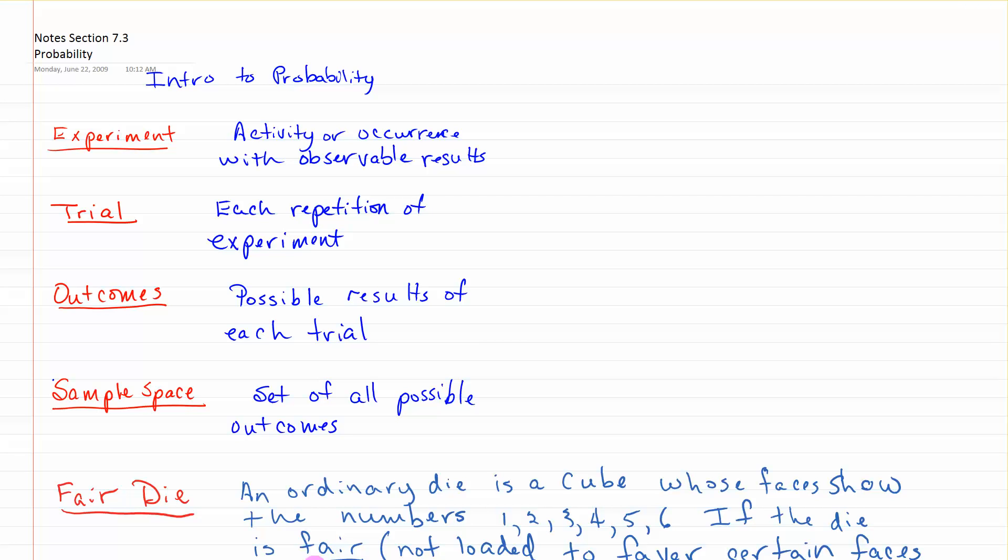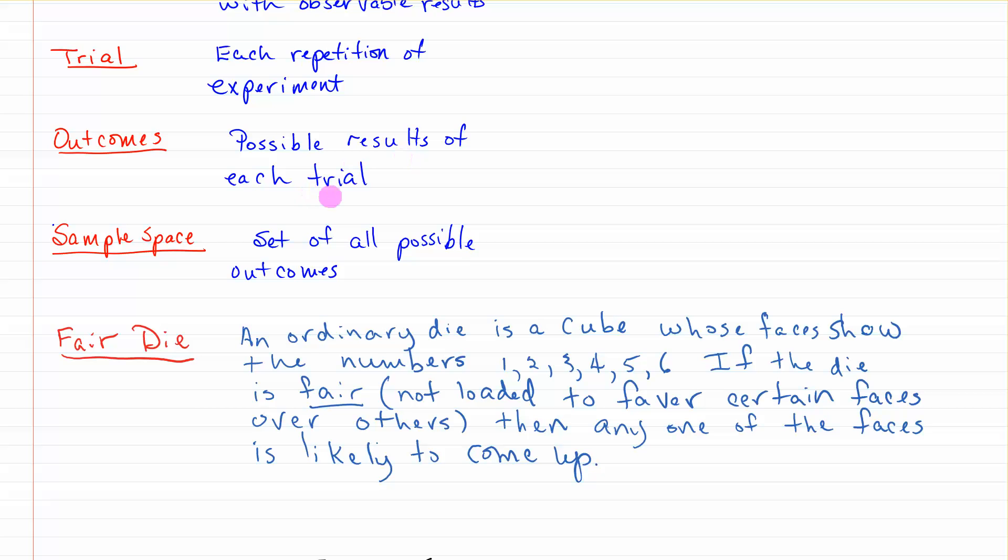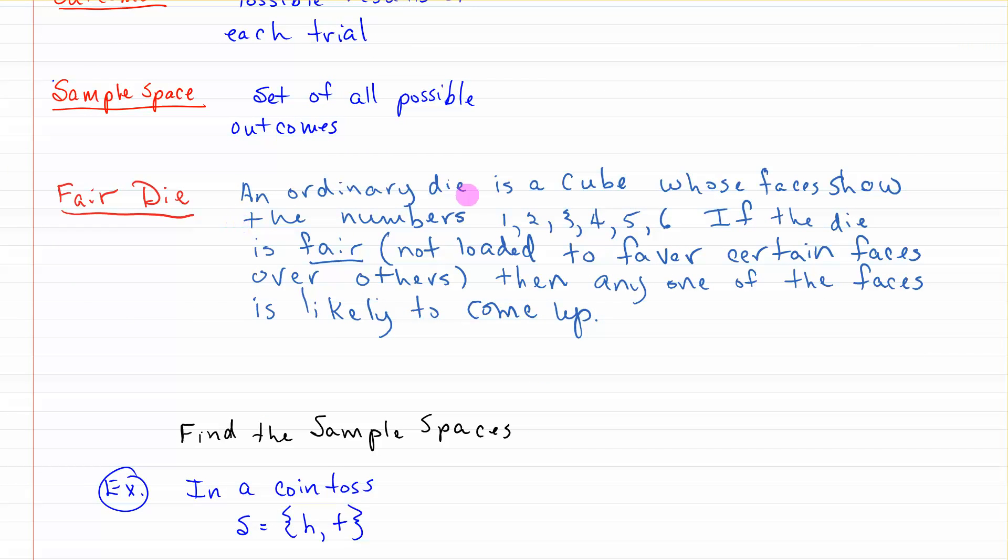This is section 7.3, an introduction to probability. I want to go over some terminology that you'll experience when you talk about probability. An experiment is an activity or occurrence with observable results. A trial is each repetition of the experiment. Outcomes are the possible results of each trial. A sample space is the set of all possible outcomes. You also need to know when they use the word fair die. An ordinary die is a cube whose faces show the numbers 1 through 6, and if it's fair that means it's not loaded to favor certain faces over others, so any one of the faces is likely to come up.